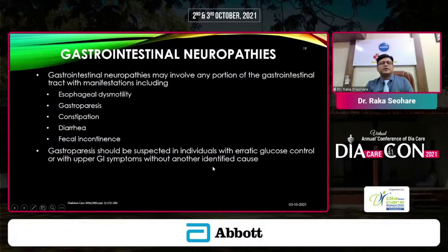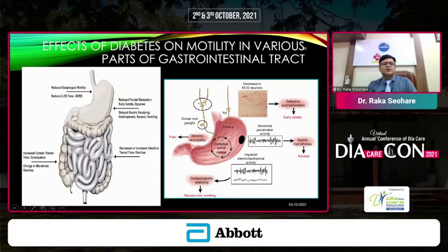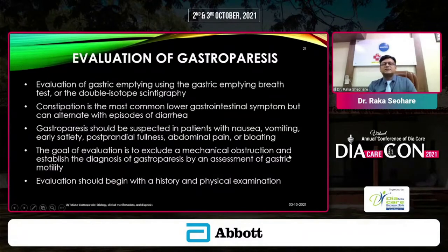Gastrointestinal neuropathy may involve any portion of the GI tract, presenting as esophageal dysmotility, gastroparesis, constipation, diarrhea, or fecal incontinence. When we probe our patients, most are suffering from these symptoms. Gastroparesis should be suspected in individuals with poor glucose control or upper GI symptoms without another identified cause. The entire GI tract is well-innervated and acts as combined machinery. Neuropathy causes dysmotility, reduced pyloric tone, GERD, delayed gastric emptying, changes in small and colonic transit time, changes in gut microbiota, defective antral mixing, and gastric dysrhythmia — it behaves like a GI heart.